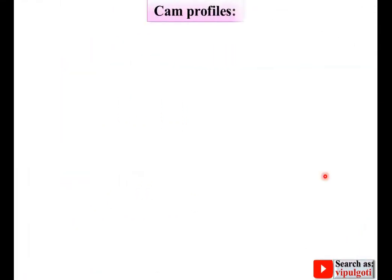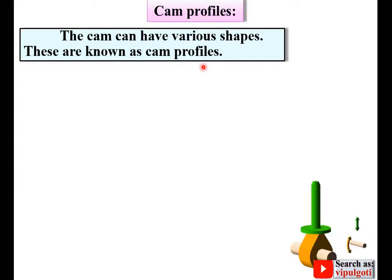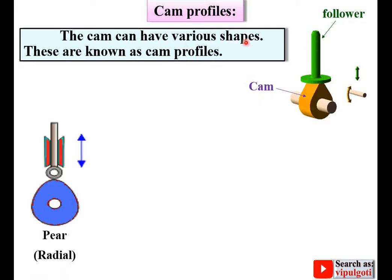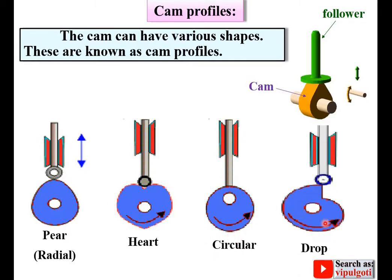Now, CAM Profiles. The CAM can have various shapes, which are known as CAM Profiles. Here you can see a CAM having a particular shape — that is known as the CAM Profile. The CAM can have a pear or radial shape, a heart shape, or a circular shape, among many other types.